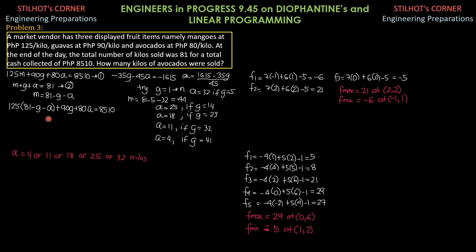125 times 81 minus G minus A plus 90G plus 80A equals 8,510. Simplifying, we have negative 35G, which is this. Then, negative 125A plus 80 is negative 45A. So, solving for A, A is 1,615 minus 35G over 45. So, try 1 to N until such time that we get A is 32 if G is 5.